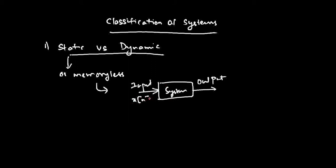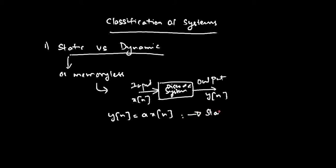For example, consider a discrete system whose input is x(n) and output is y(n). This system is called a static system if y(n) depends only on x(n) at the same instant — for example, y(n) = a · x(n). You can observe that the output at any instant depends only on the input at that same instant, not on previous or future values of x(n).